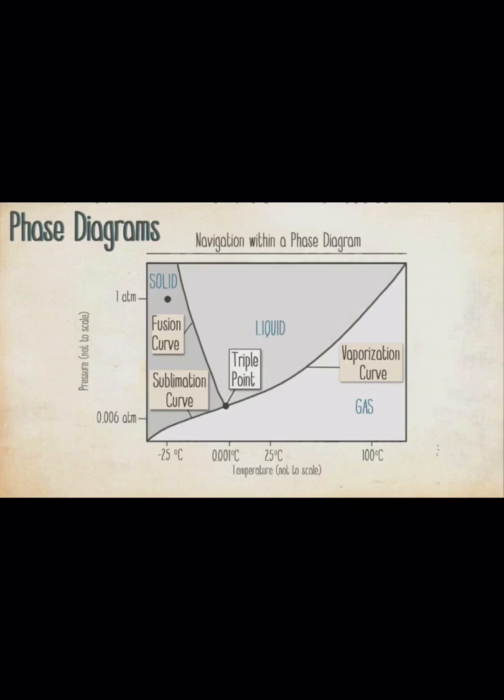At 0 degrees Celsius, you hit the fusion curve. There, the temperature stops rising and the ice melts into a liquid.